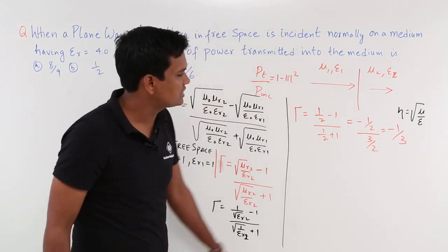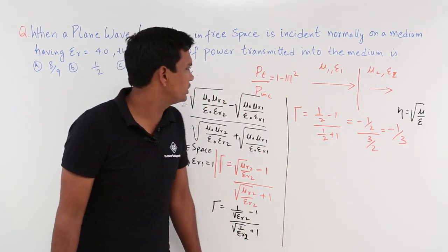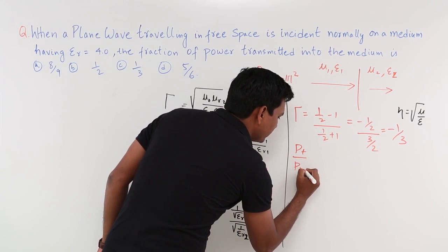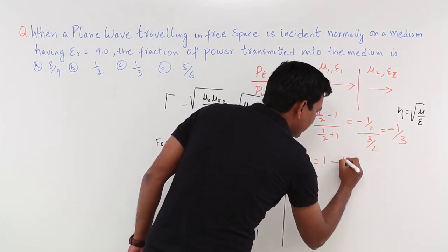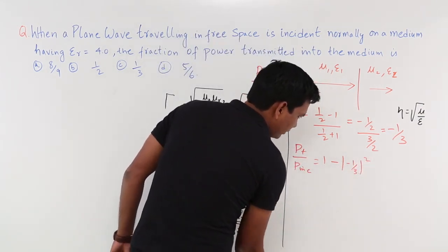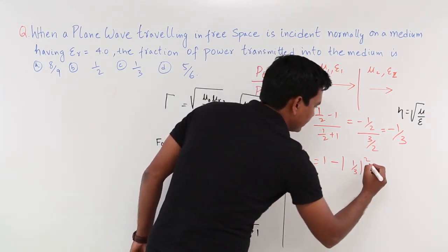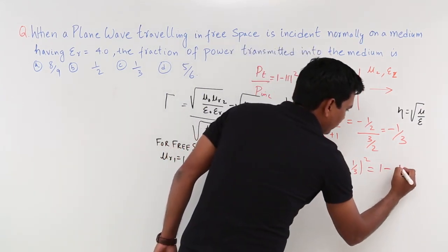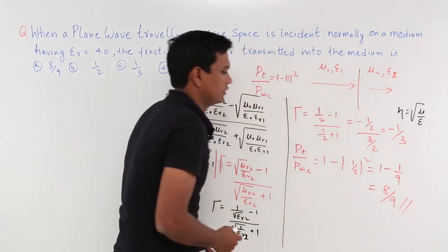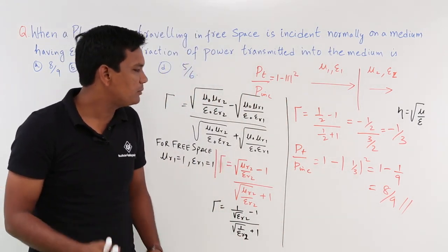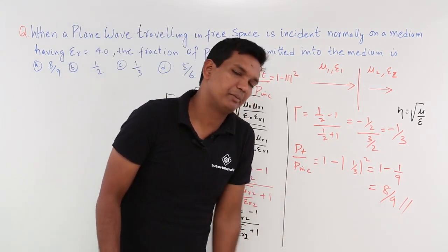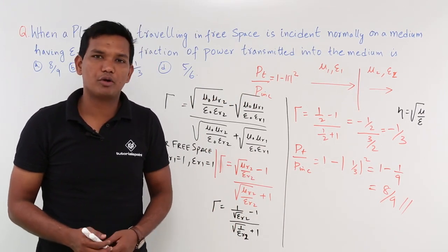So I got the reflection coefficient as minus 1/3. The moment I have the reflection coefficient, I can easily find the transmitted power. Pt by P incident equals 1 minus mod tau squared, which is 1 minus mod of (minus 1/3) squared, equals 1 minus 1/9, which is 8/9. So we have concluded the answer — the fraction of power transmitted into medium 2 comes out to be 8/9. We will see more problems in the next videos.